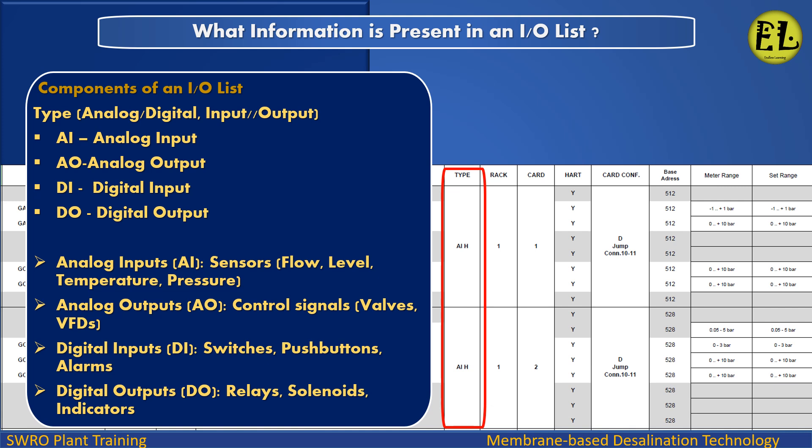Analog Inputs (AI): sensors for Flow, Level, Temperature, and Pressure. Analog Outputs (AO): control signals for Valves and VFDs. Digital Inputs (DI): discrete switches, push buttons, and alarms. Digital Outputs (DO): relays, solenoids, and indicators.